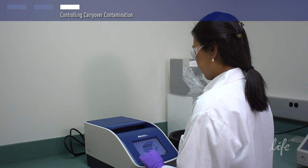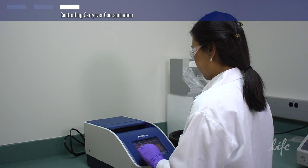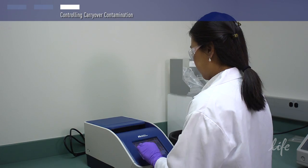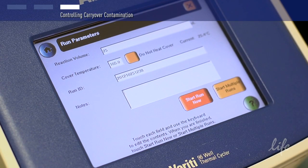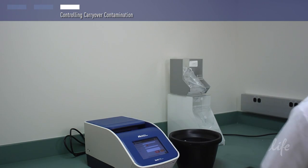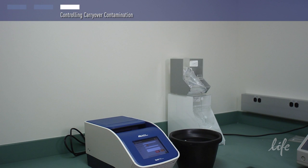During this time, UDG will first cleave uracil bases from any PCR products present, preventing them from being used as a template. The second incubation at high temperature will inactivate the UDG enzyme. By following these steps, you should be able to avoid PCR contamination.